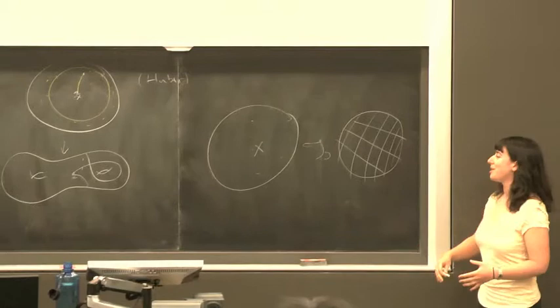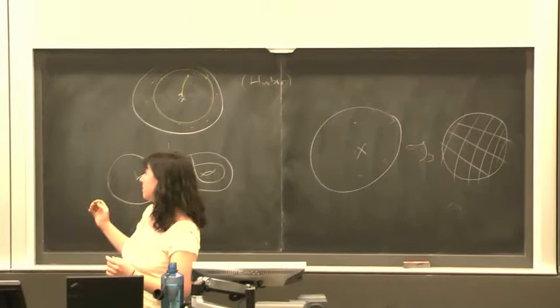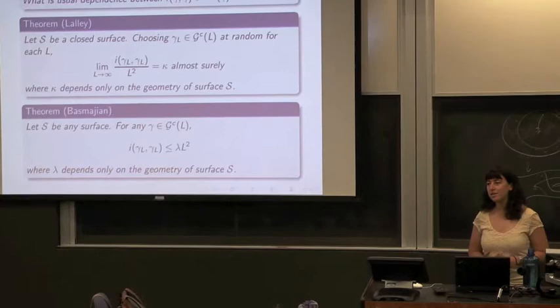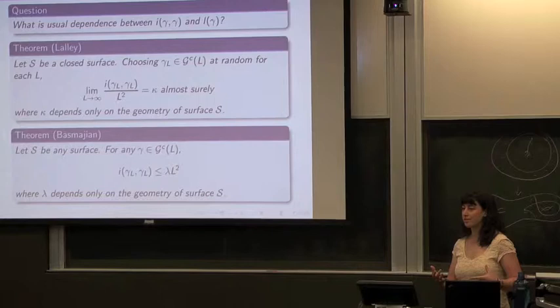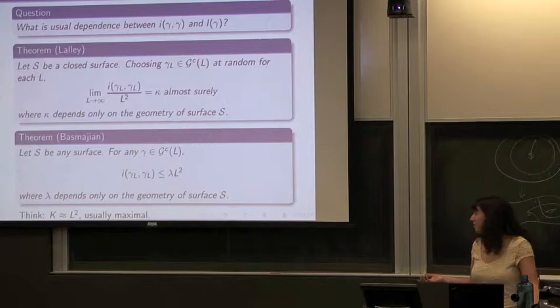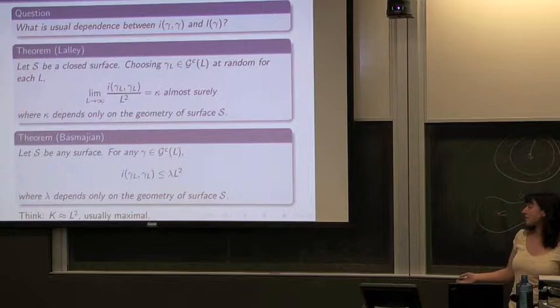What does κ depend on? It depends on the metric of the surface. For every — it's just κ is a function of the metric. If you have a really short curve on your surface, you might get lots of intersections for very small lengths, so it's not uniform. The moral is that your intersection number is usually like L², and it's usually maximal — L² is maximal.